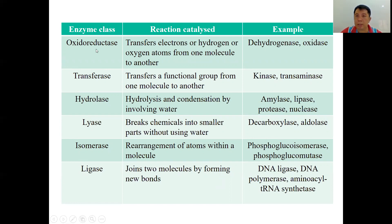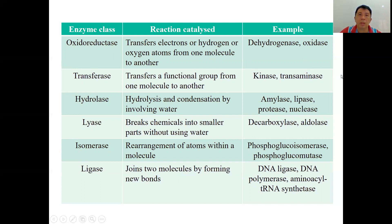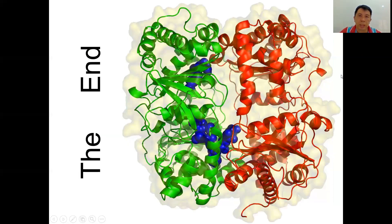The summary table shows oxidoreductase, transferase, hydrolase, lyase, isomerase, and ligase — with the reactions catalyzed by each class and their examples. That's the end of today's lesson. I hope you now understand how enzymes are classified into the six major classes according to IUBMB. Thank you and bye.